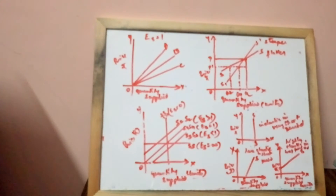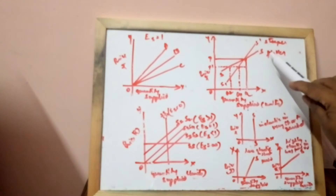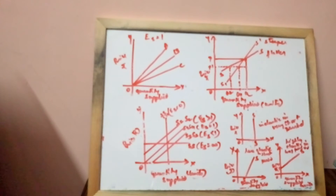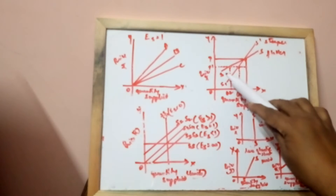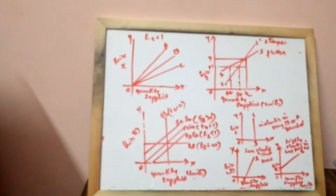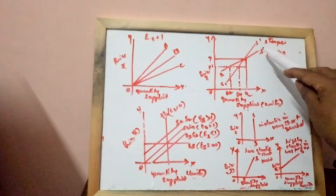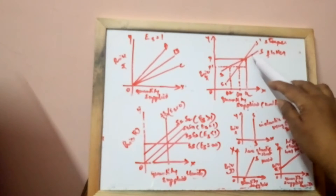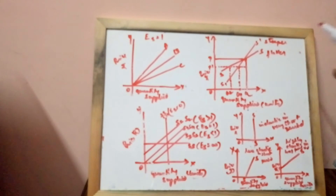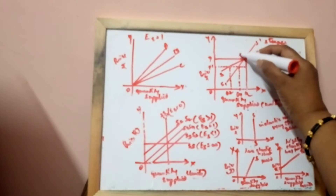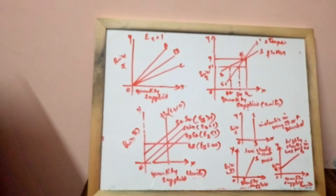Now we will see the second diagram. You find a flatter curve and a steeper curve. The flatter the curve, the more is the elasticity at the point of intersection. Here you find supply curve Ss is flatter, and S1S1 intersects Ss at point E.